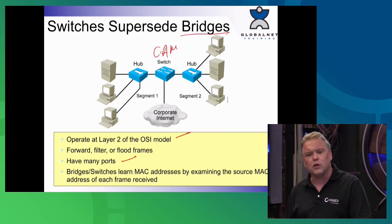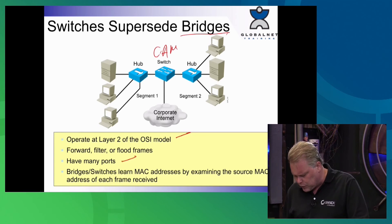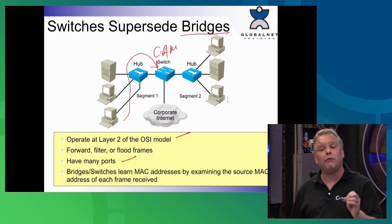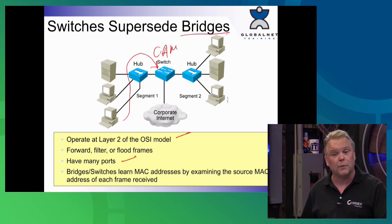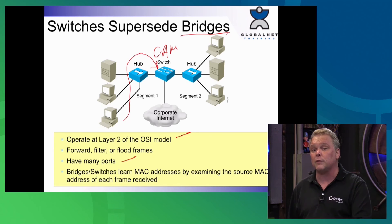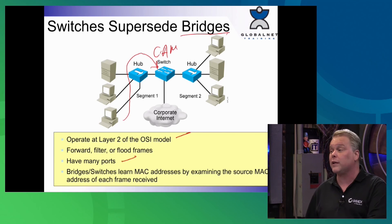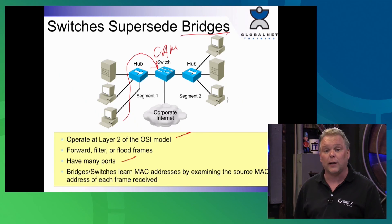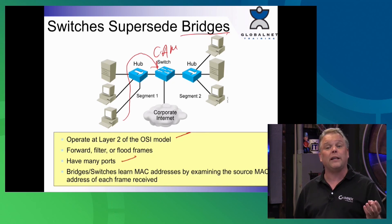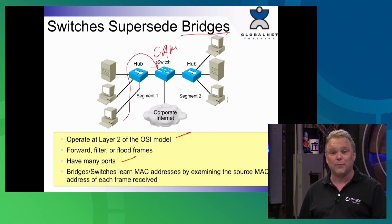The most important thing: bridges and switches learn MAC addresses when a frame comes in. Every time a frame arrives, we first run a CRC check, then read the source MAC address and make sure it's in the CAM table — if not, we add it. We now only run store-and-forward switching, not cut-through or fragment-free. We run the CRC first because if fragmentation occurs, we won't be able to get the correct MAC address.